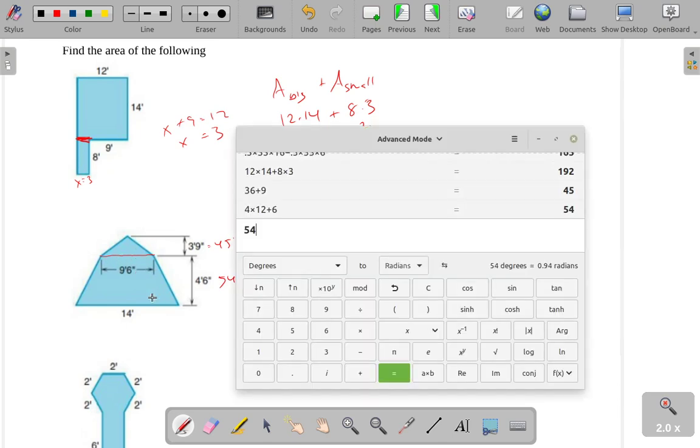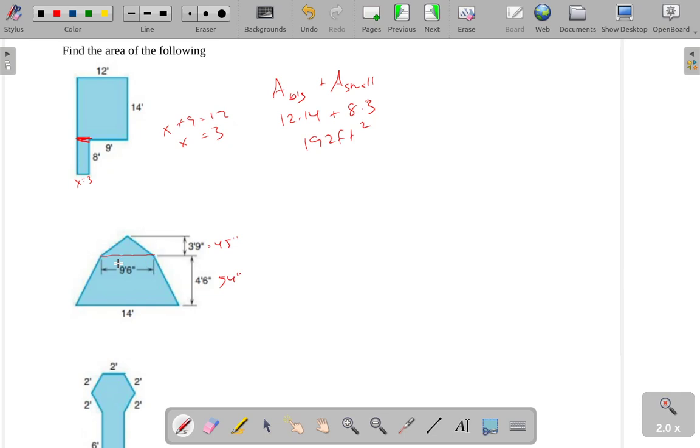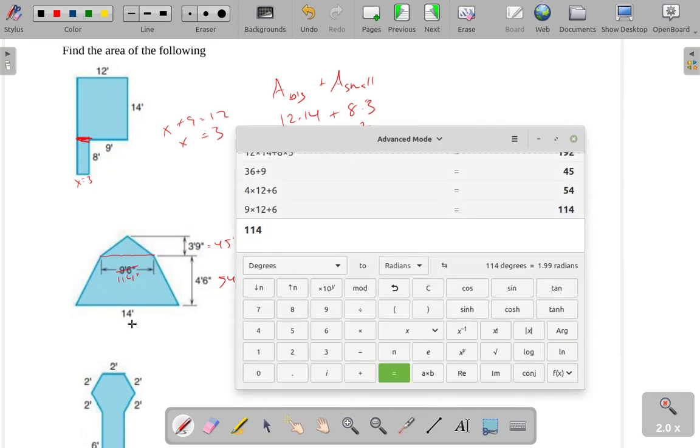9 foot 6, that's the next conversion I'll do. 9 times 12 plus 6 is 114 inches. And 14 feet, I don't want to leave that as feet, because everything else is in inches. I'll go ahead and call this 168 inches.